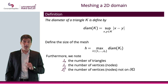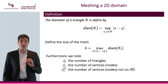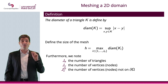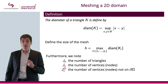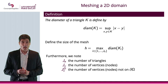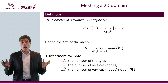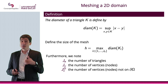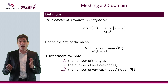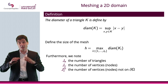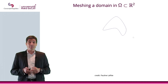We introduce three counts: Jₑ is the number of triangles (elements); Jᵥ is the total number of vertices (nodes); and Jᵥ_D is the number of interior vertices — nodes not on the boundary. For a Dirichlet problem, you will have Jᵥ_D unknowns, since the values on boundary nodes are already known.